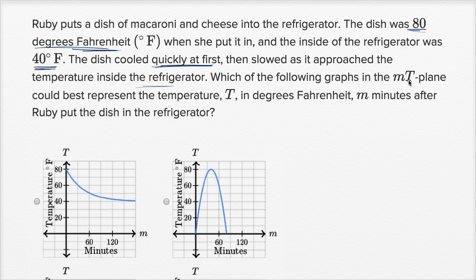So M-T plane sounds very fancy, but all they're saying is the horizontal axis is our time axis, and it's going to be measured in minutes, M for minutes. And our vertical axis in this coordinate plane is going to be our temperature axis, measured in Fahrenheit degrees.